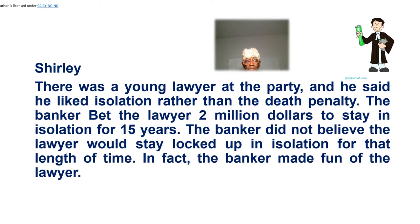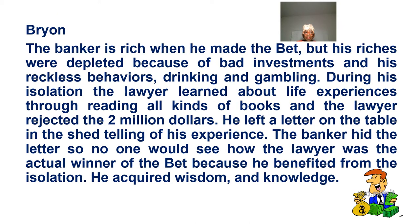We have one more — Ryan. Ryan wrote: the banker is rich when he made the bet, but his riches were depleted because of bad investments and his reckless behavior — drinking and gambling. During his isolation, the lawyer learned about life experiences through reading all kinds of books. And the lawyer rejected the $2 million. He left a letter on the table in the shed telling of his experience. The banker hid the letter so no one would see how the lawyer was the actual winner of the bet, because he benefited from the isolation. He acquired wisdom and knowledge.